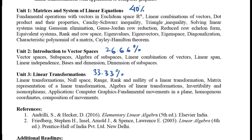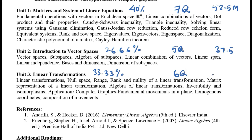If Unit 1 is 40% of the syllabus, you can approximate around seven questions, with about five questions arising — that is approximately 37.5 marks. Unit 3 has around six questions, approximately 45 marks. The total marks for the paper is 90, so each question is worth 7.5 marks.